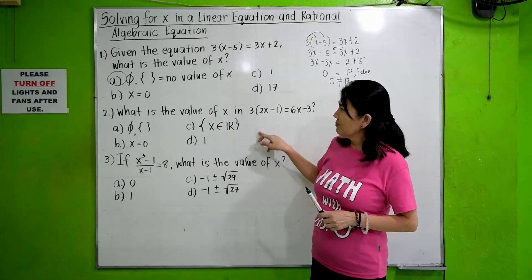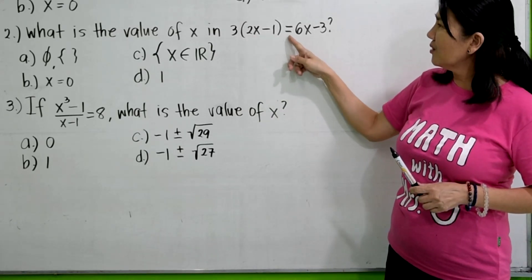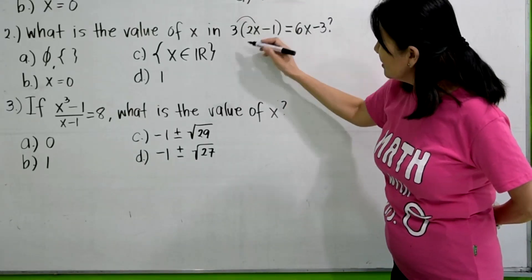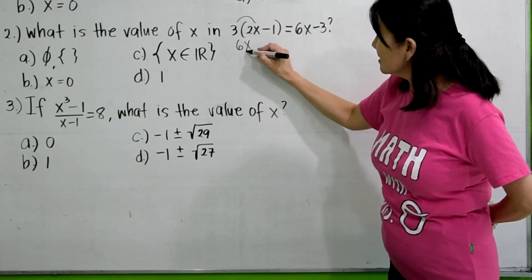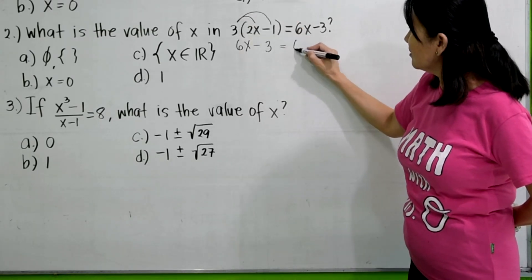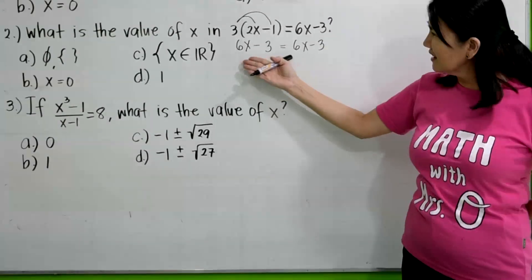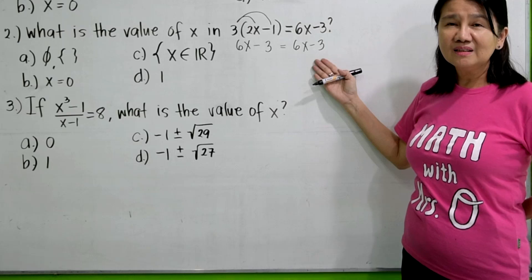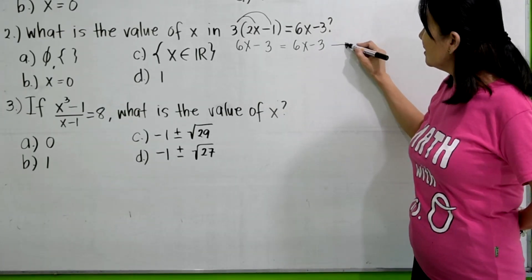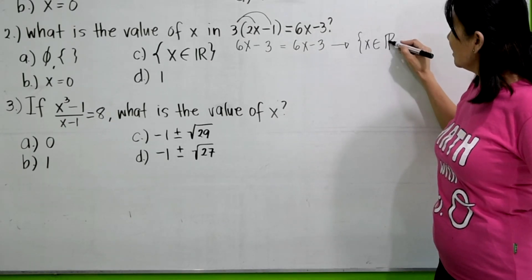When I was teaching at Philippine Science High School, most of my students answered letter B, so don't get into that trap. Next, number 2: what is the value of X in 3 times the quantity 2X minus 1 equals 6X minus 3? We distribute 3, so we get 6X minus 3 equals 6X minus 3. Did you observe? The left side and the right side of the equation are equal.